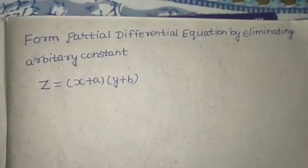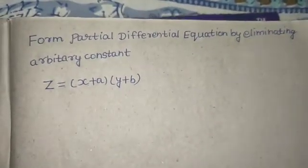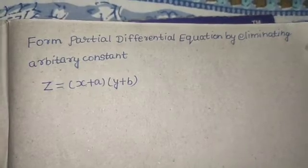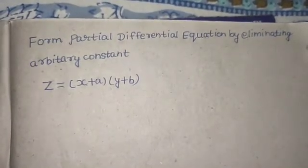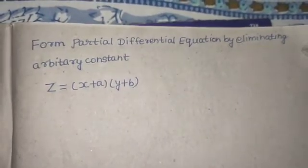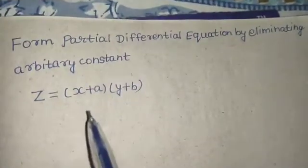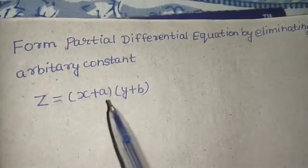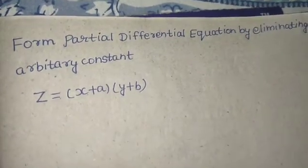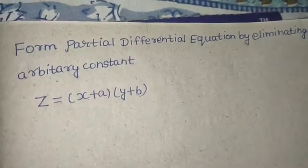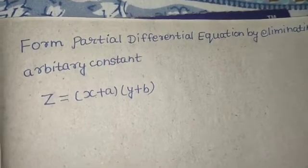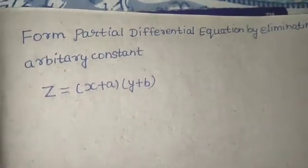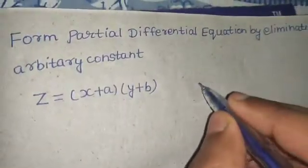Hello everyone. Let's solve this question: form a partial differential equation by eliminating arbitrary constants. We have to eliminate the arbitrary constants a and b from the given equation. Let this be equation number one.